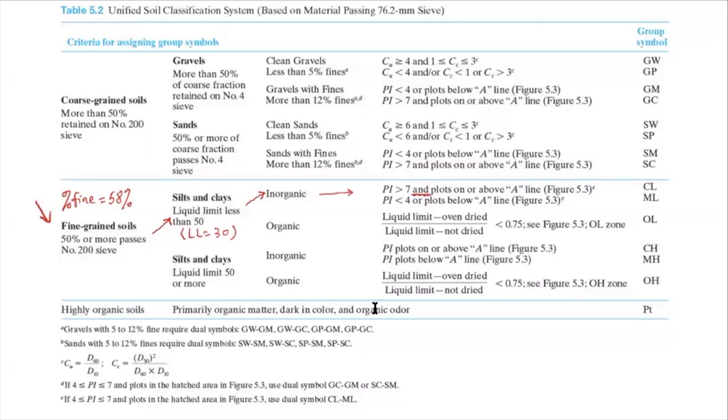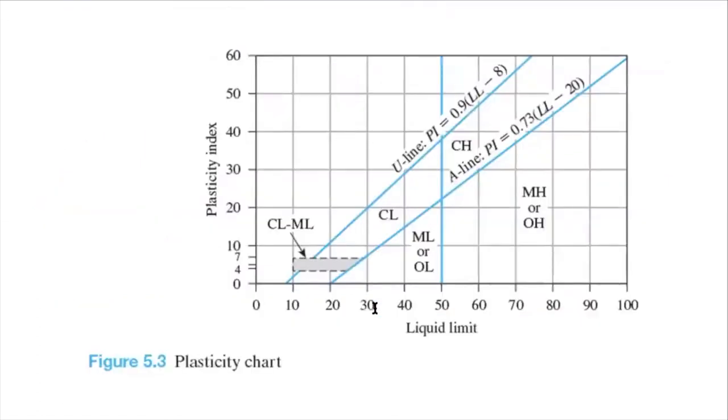So PI greater than seven. We meet that. And then let's plot this soil on the plasticity chart. So for this soil, LL is 30.